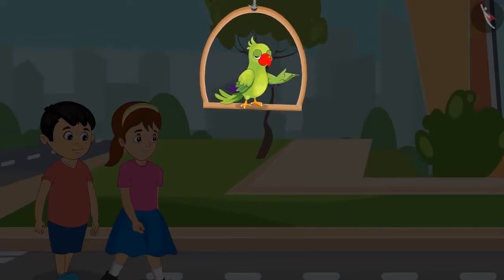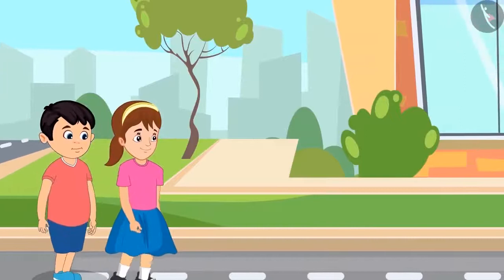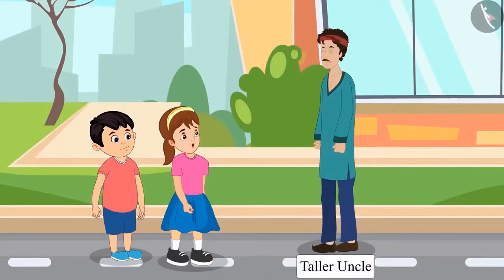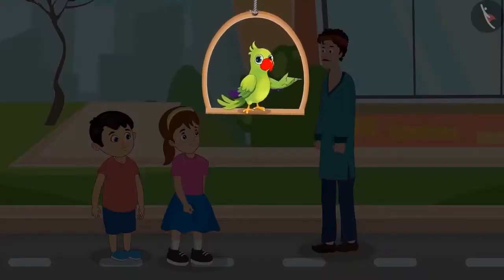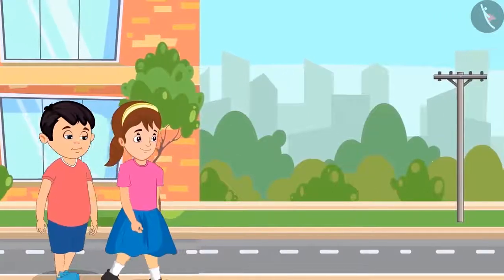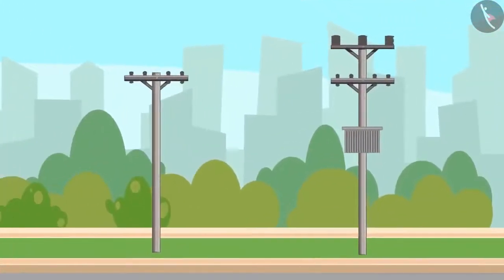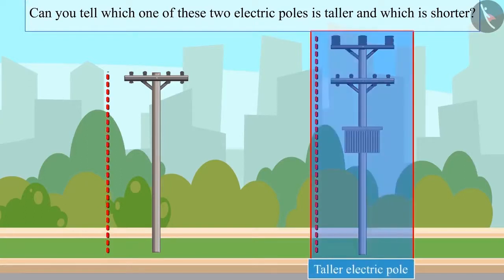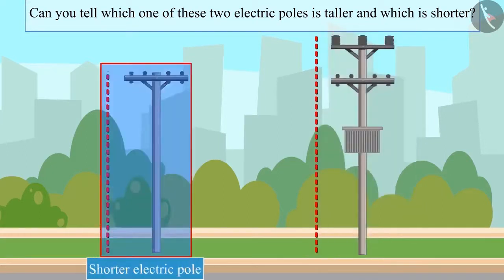Chotu and Aarti were going home together after flying their kites. While going home, they saw an uncle on the way. Aarti says, 'Chotu, look how tall that uncle is.' Chotu agrees, 'Yes Aarti, this uncle is much taller than both of us.' After walking a little further, Chotu and Aarti saw two electric poles. Children, can you tell which of these two electric poles is taller and which is shorter? Yes — this pole is taller and this one is the shorter one.